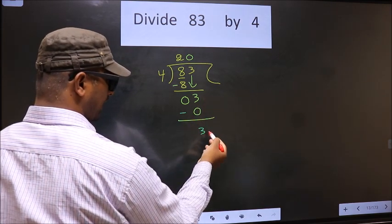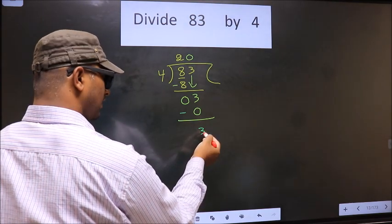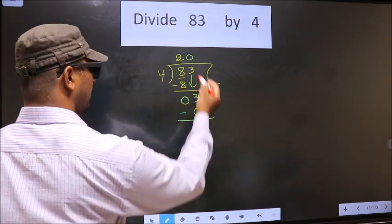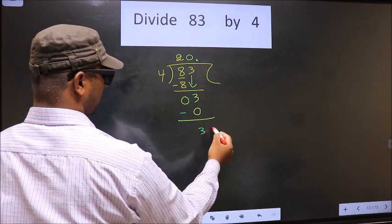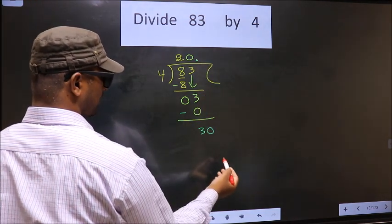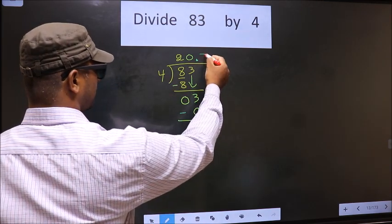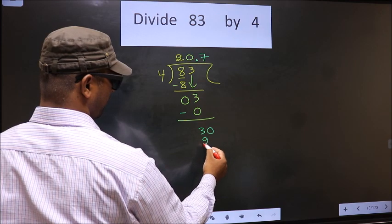Over here we did not bring any number down. Now 3 is smaller than 4. So here we can put a dot and take 0 here. Now here we have 30, a number close to 30 in 4 table is 4 7s, 28.